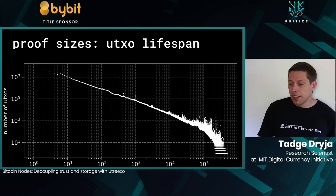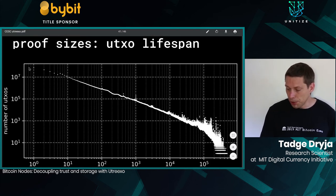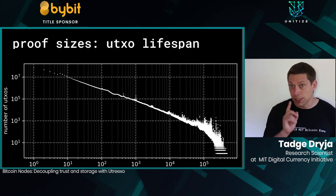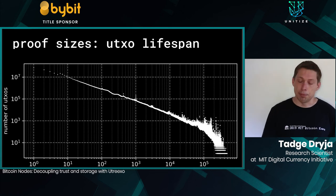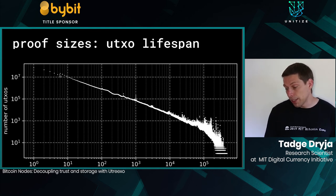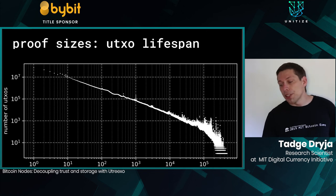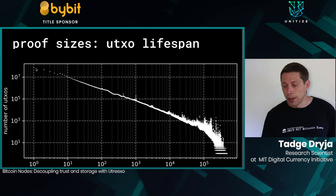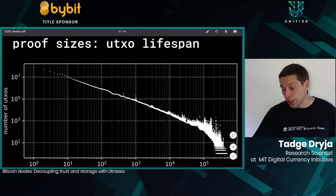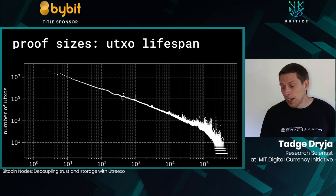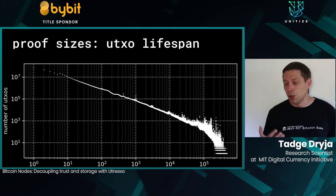A graph showing UTXO lifetimes reveals that UTXOs living just one block are the second most common (most common was zero blocks). There are notable bumps at six blocks (many people wait six confirmations before spending), at 100 blocks (miners must wait 100 blocks), and at 433 and 1,000 blocks. It follows a power-law distribution: many UTXOs live a short time, and many trail off to long lifetimes. With good caching — just remembering 10 blocks ahead — you capture roughly half of all transaction inputs.